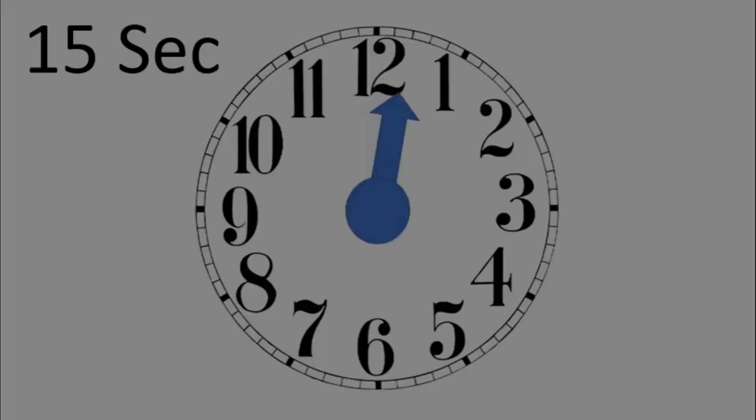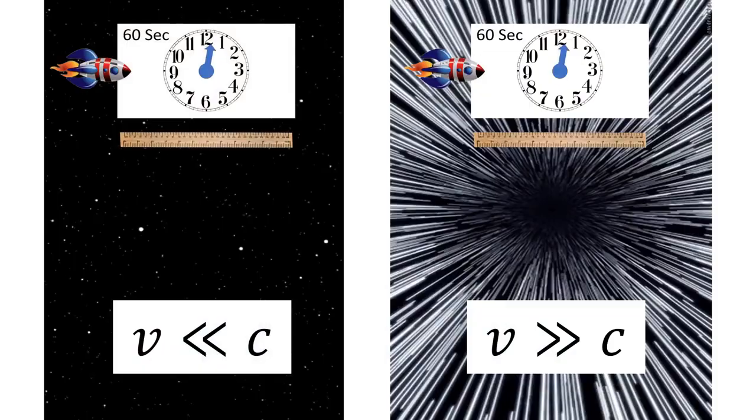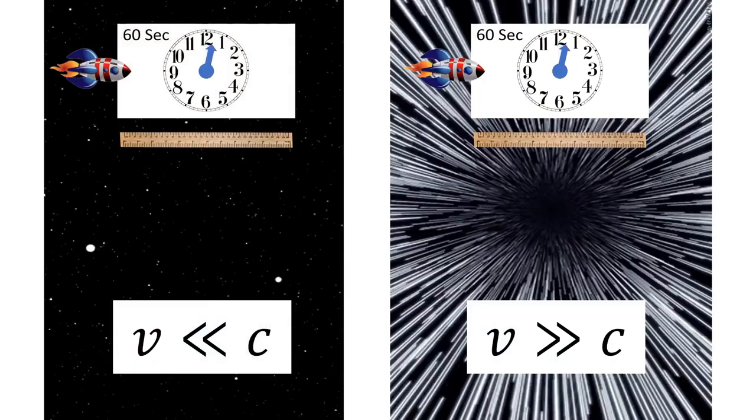An important thing to consider when discussing relativistic time dilation and length contraction is our perception of time and length. If I have a clock with me, regardless of my speed — whether below or faster than the speed of light — the lapse of time will always look the same to me, because I'm in an inertial reference frame. Each of us has our own viewpoint of how we perceive the world, and that reference frame travels with us regardless of speed.